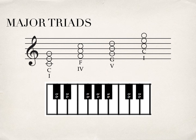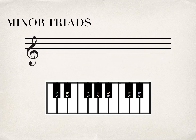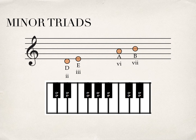Now we're moving on to minor triads. The concept is the same — there's only one difference: the lower third consists of a minor third, which would be three half-steps. In the key of C, there are really three chords that are minor. The seventh chord is its own special chord — it's called a diminished chord, but we'll get into that in a later lesson.